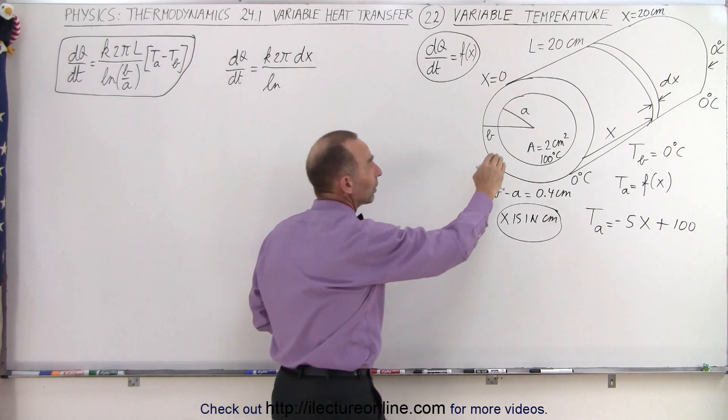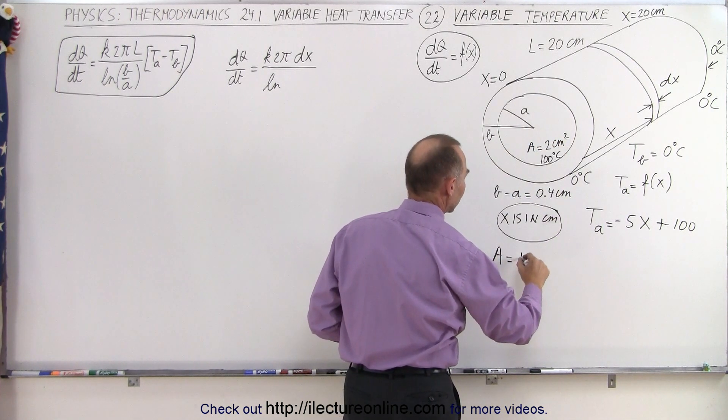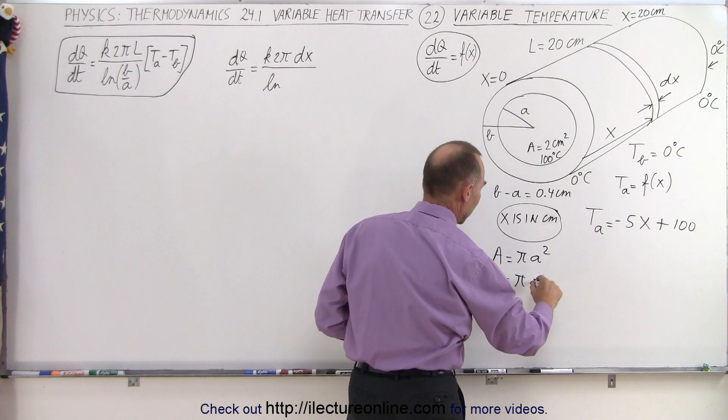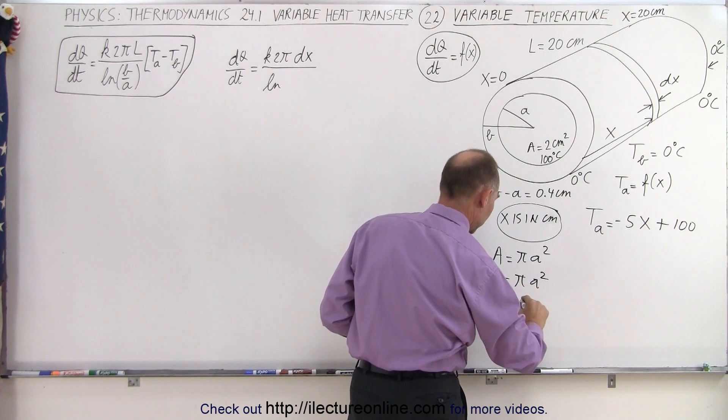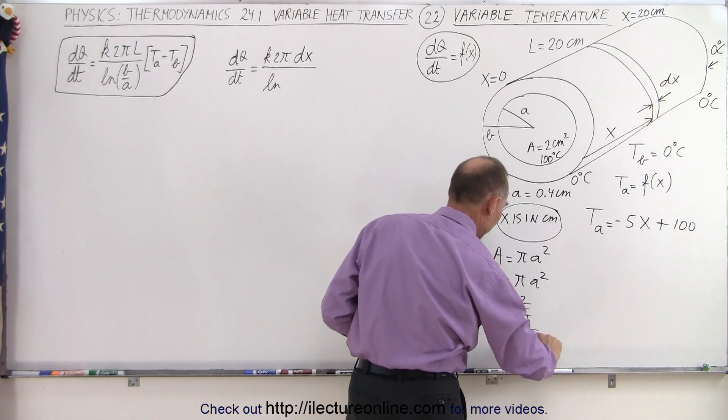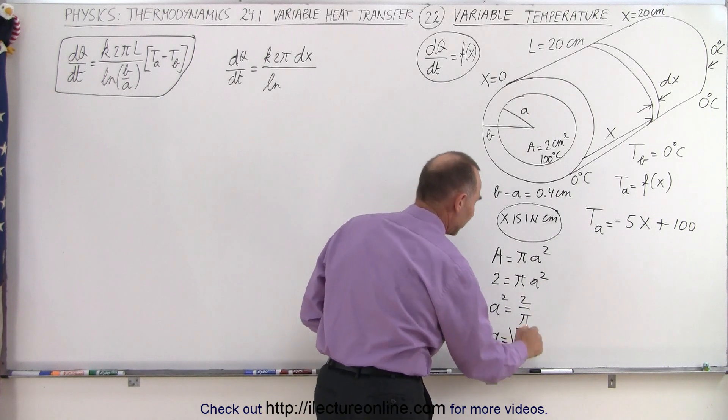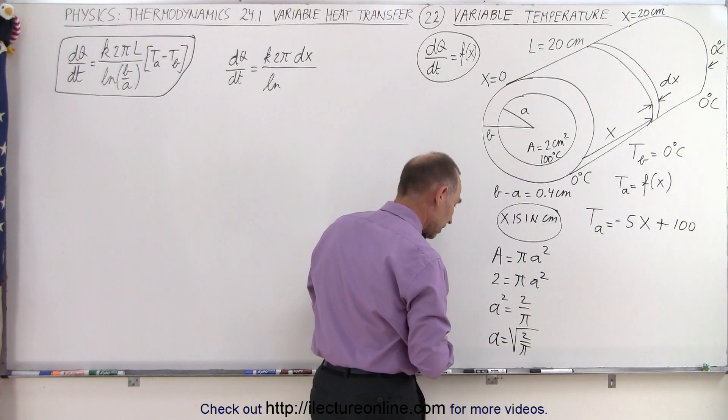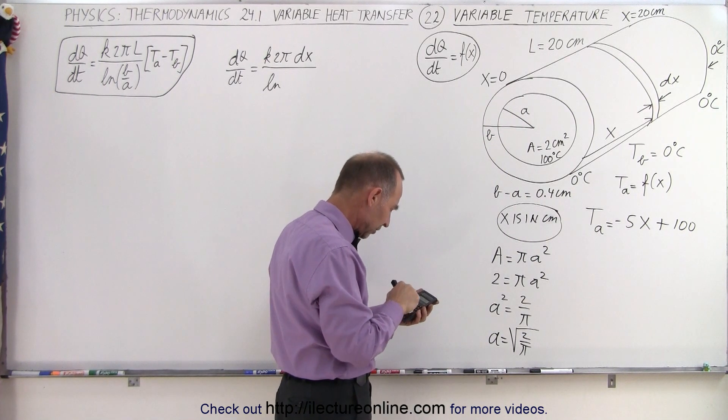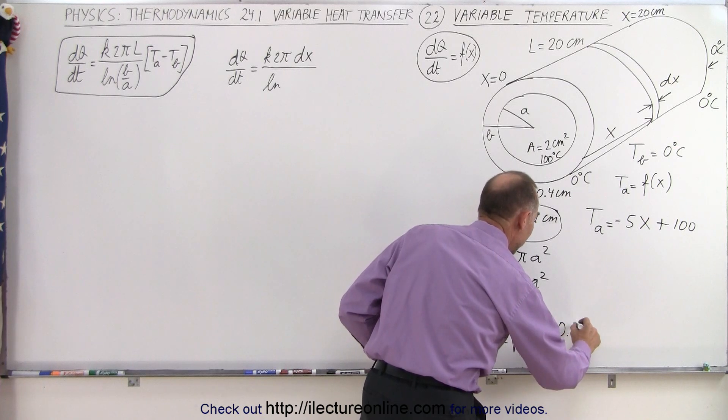We need to calculate it first. We're told that the area of the inside cylinder, that's metal, is 2 centimeters squared. So we know that the area is equal to pi A squared, and the area is equal to 2. That means 2 is equal to pi A squared, or A squared is equal to 2 divided by pi, which means that A is equal to the square root of 2 divided by pi. So 2 divided by pi, take the square root of that, that's 0.8. We'll round it off to 0.8 centimeters.